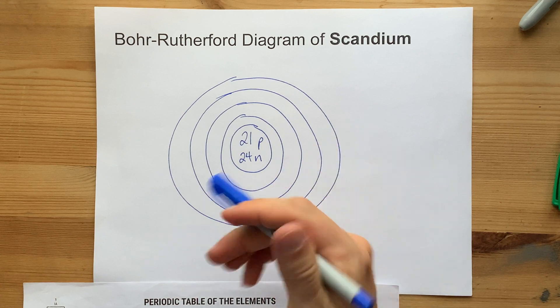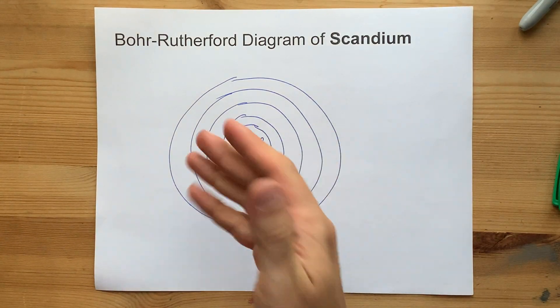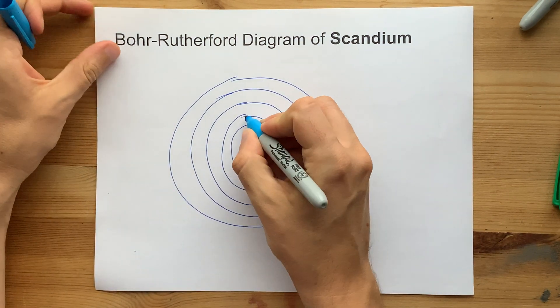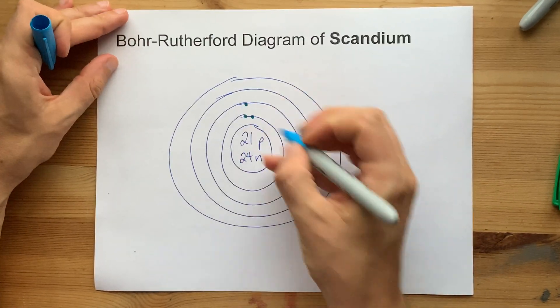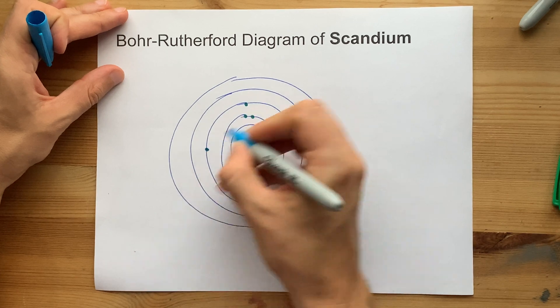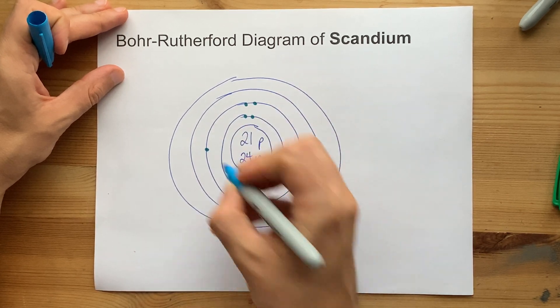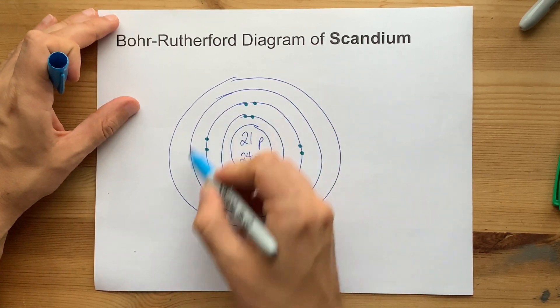The first 20 electrons of the 21 we're going to use are going to be done normally. Let's go. One, two in the first shell. One, two, three, four, five, six, seven, eight electrons in the second shell.